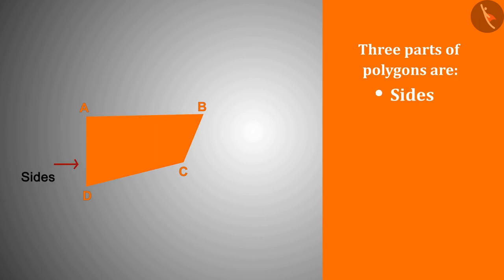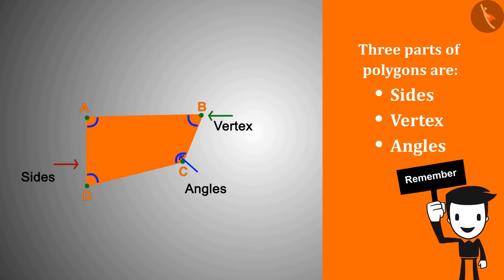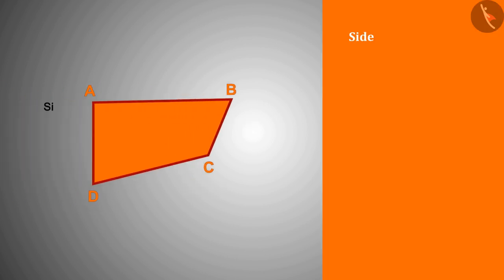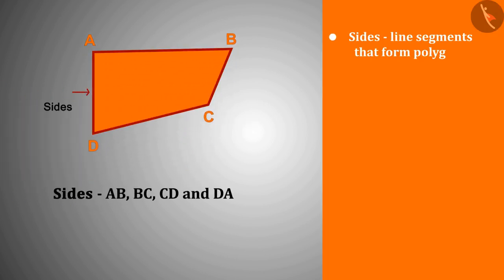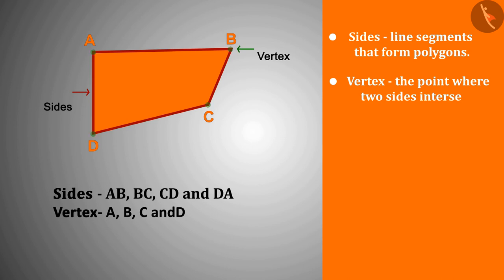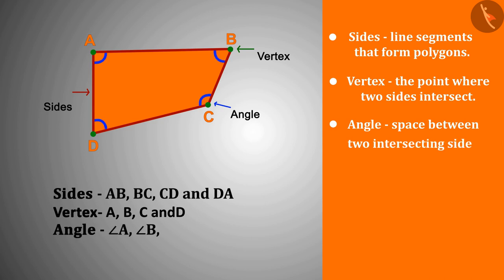We have to keep in mind that any polygon is made up of three parts, and these three parts are side, vertex, and angle. The sides are the line segments that form polygons. The vertex is the point where two sides intersect, and the space between two intersecting arms is called an angle.